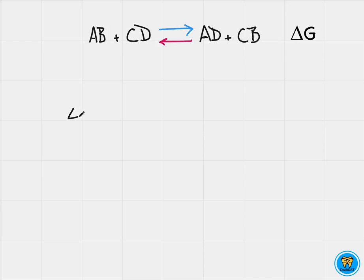When standard state delta G is very large and has a negative sign, the reaction may go to completion in the forward direction.